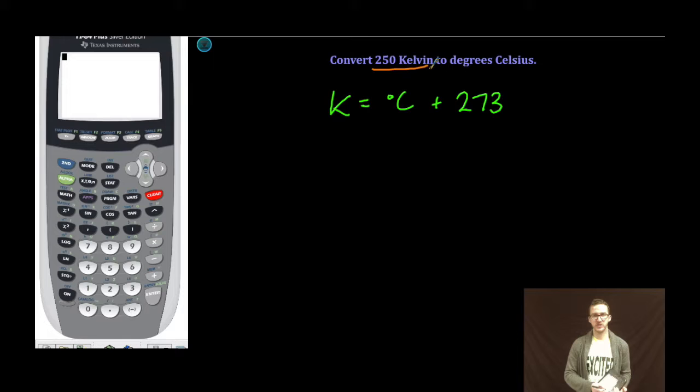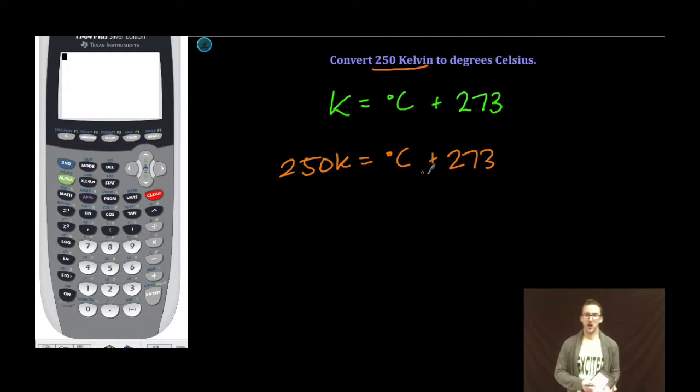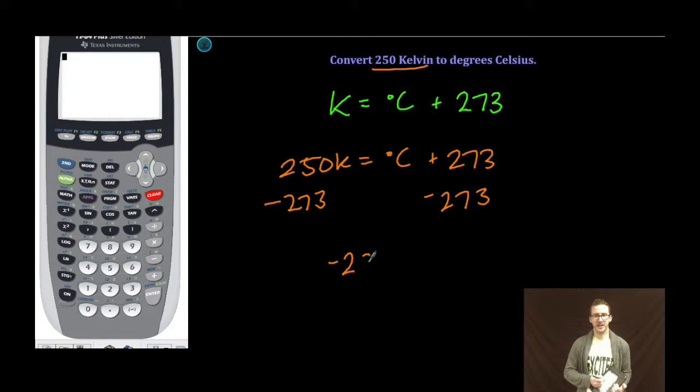So in this problem, we start with 250 Kelvin. We want to know what our temperature is in Celsius. Well, just some quick algebra here. I'm going to subtract 273 from each side, which means that my temperature in degrees Celsius is going to be negative 23.